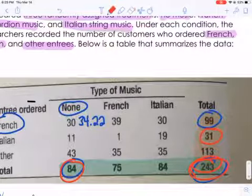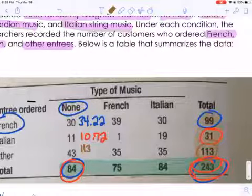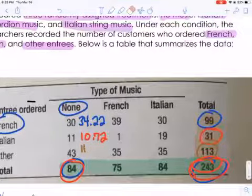So again, this is what we would expect if everything was evenly proportioned. Then I'm going to do the last one here, 43. So this is what I observed. Now what I'd expect, I'm going to multiply 113 times 84, divided by 243. 113 times 84 divided by 243, and I get 39.06.